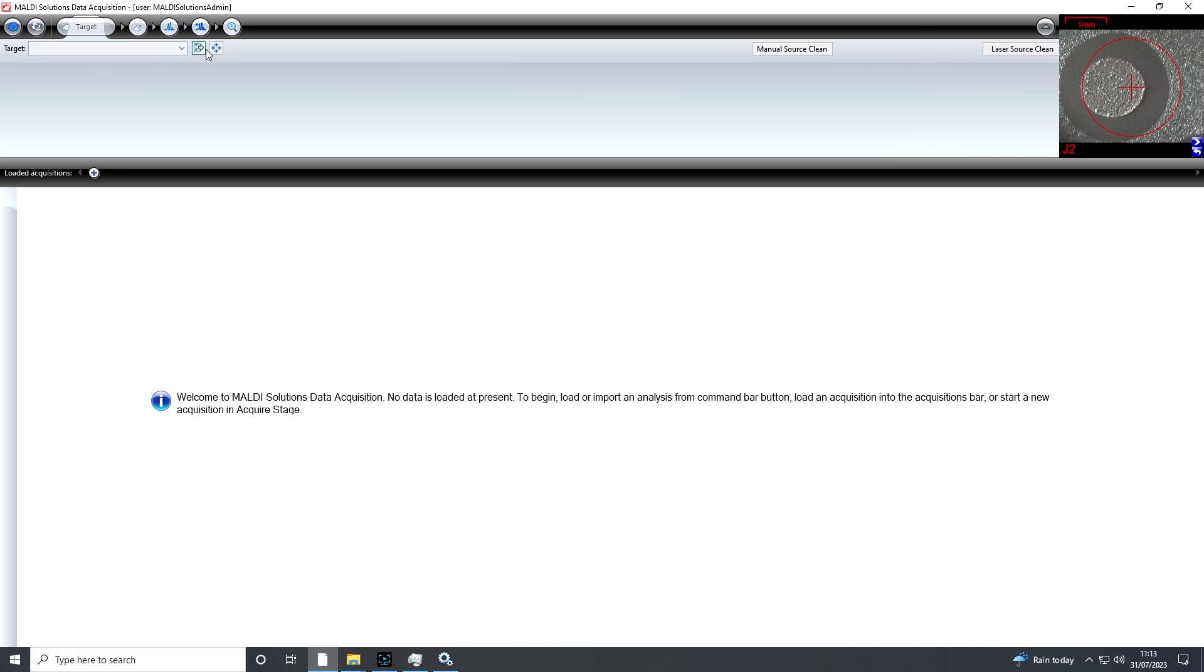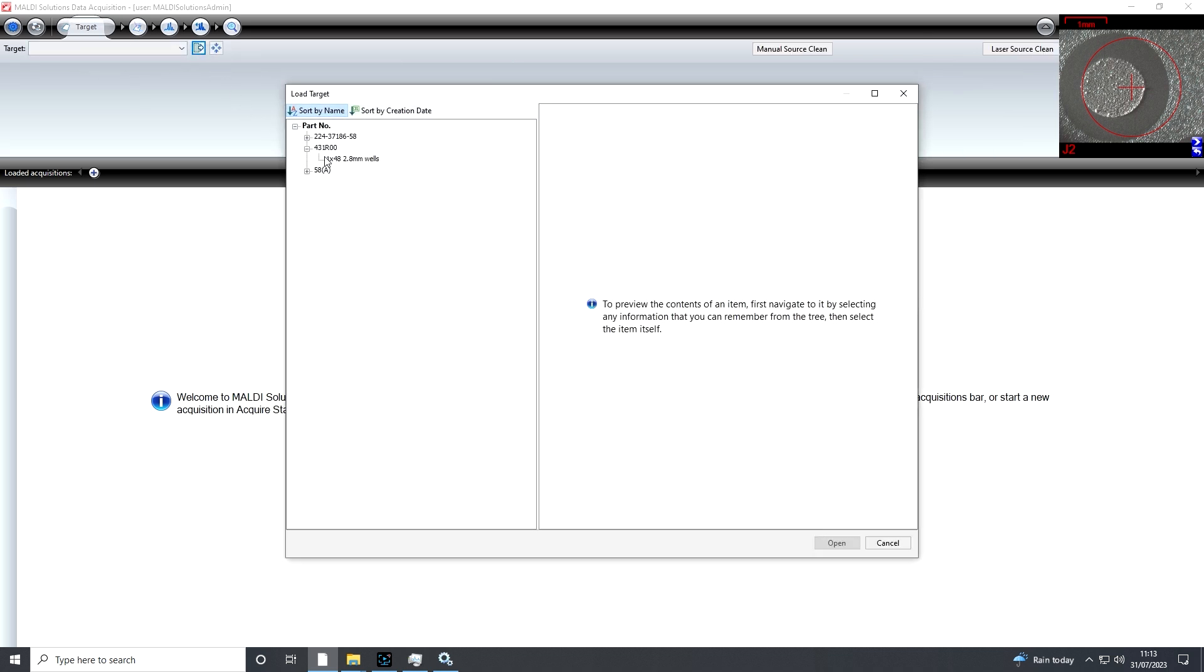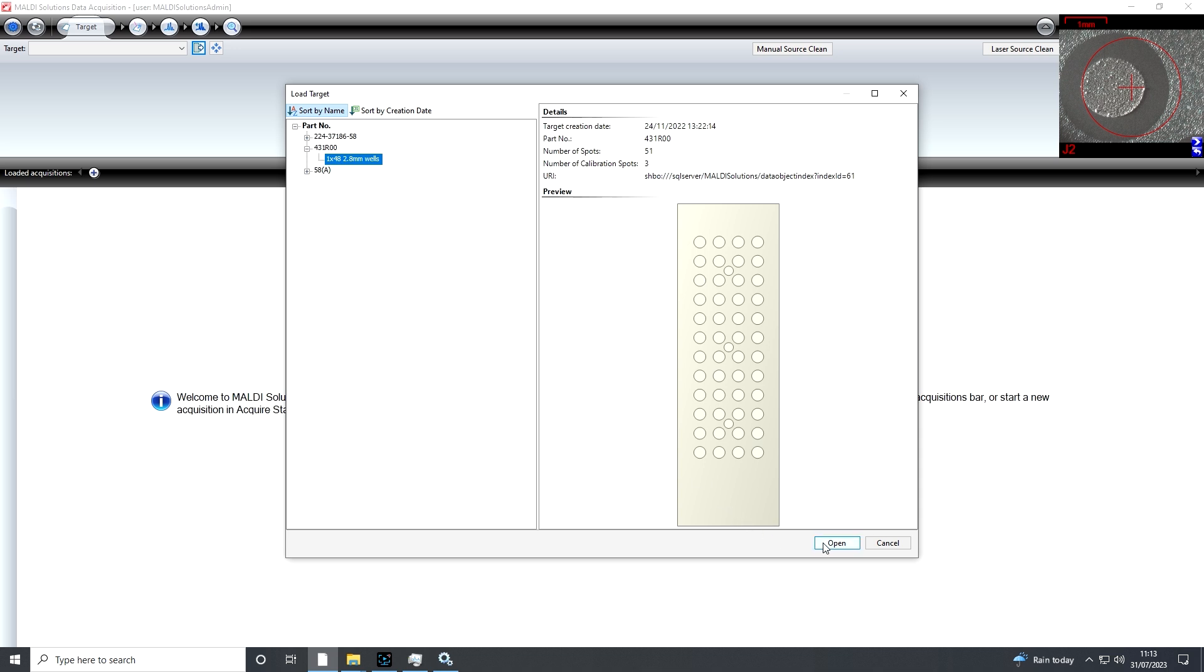Click the Target tab, then click the Load Target button. Make sure the 1x48 2.8mm well slide is selected. Click Open to load the slide.